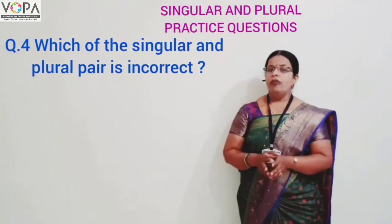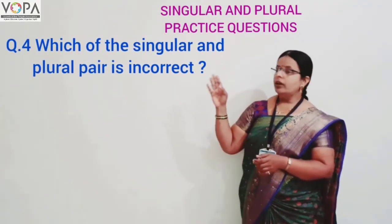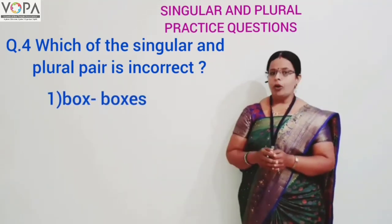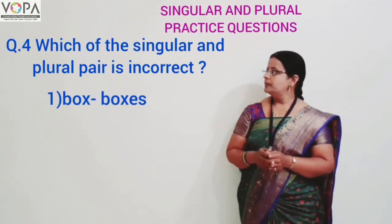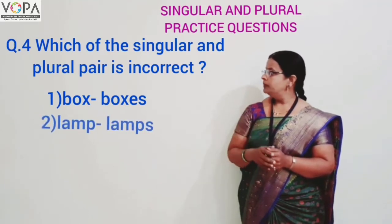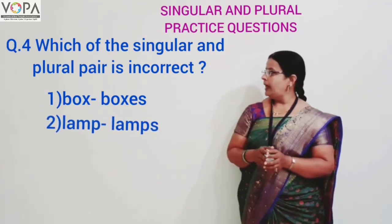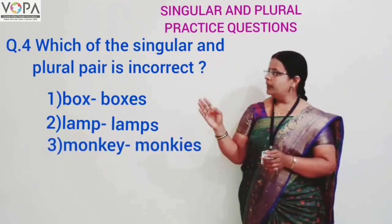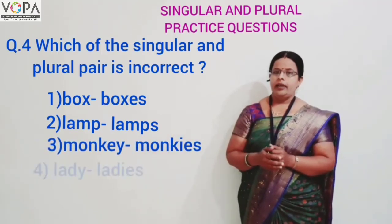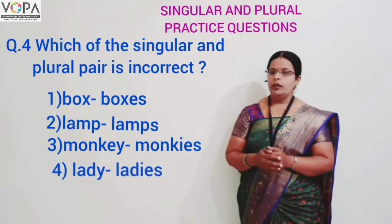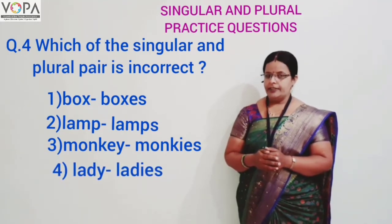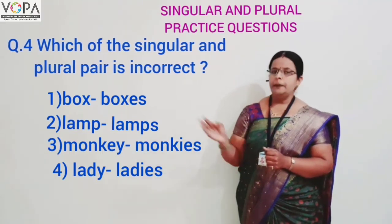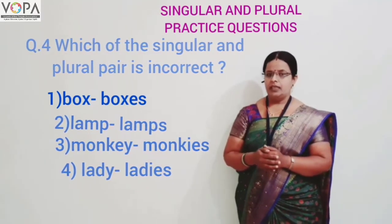Question number four: which of the singular and plural pairs is incorrect? Option one: box, boxes. Option two: lamp, lamp. Option three: monkey, monkeys. And option four: lady, ladies. The correct answer is option number three — monkey, monkeys.